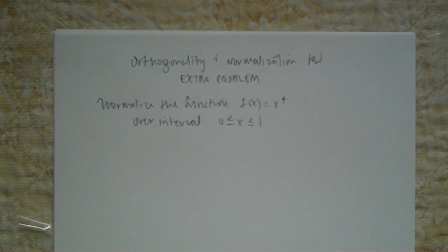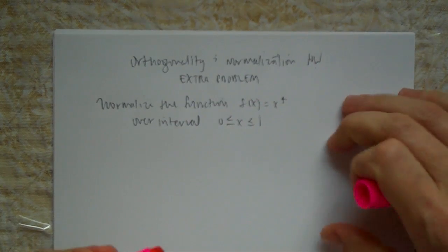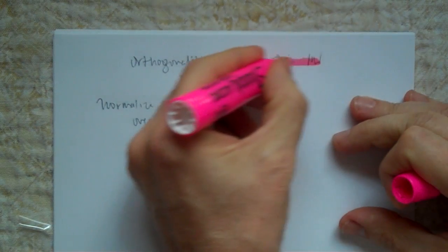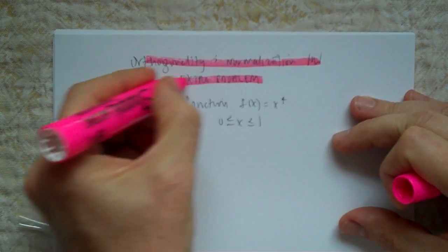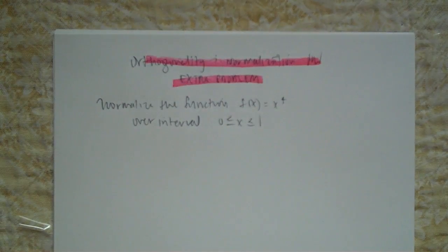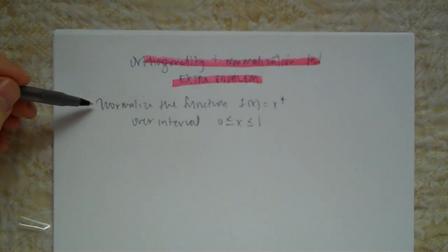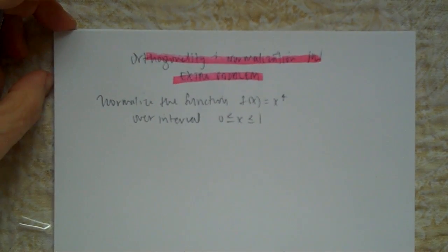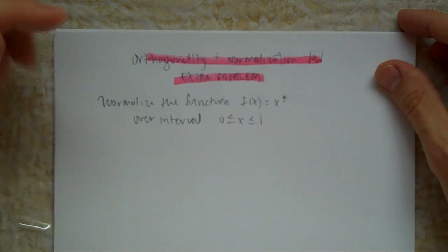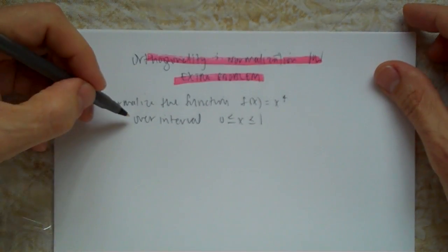I'm choosing a problem from Chapter 13, orthogonality and normalization homework. This is the extra problem, listed in your homework handout as normalize the function f(x) = x^4 over the interval such and such. This wording is exactly that of the book, so this is the kind of wording you should expect on the exam.